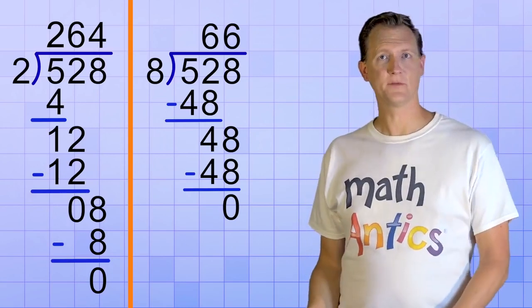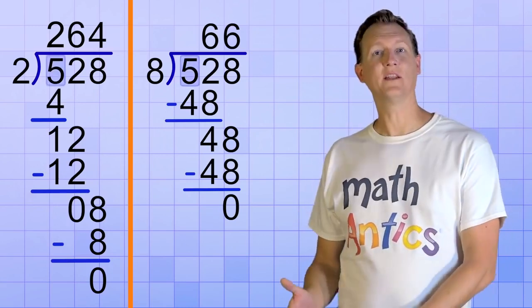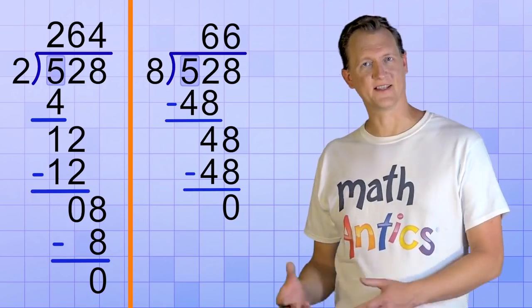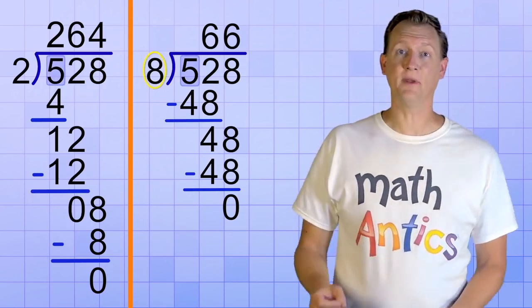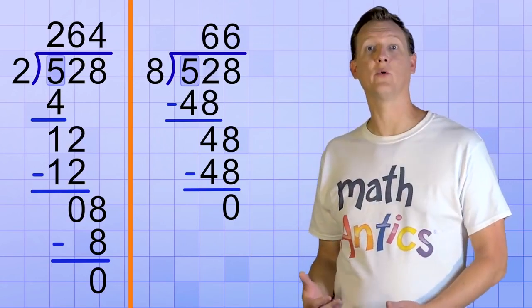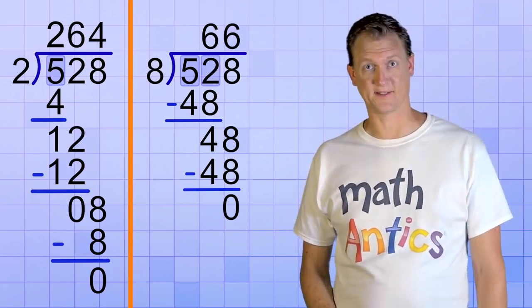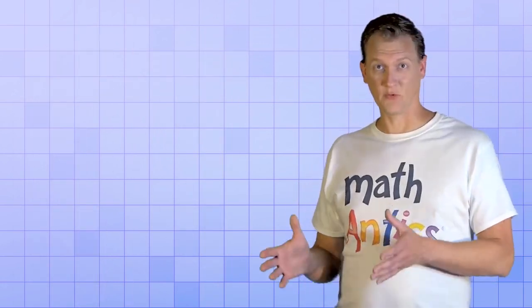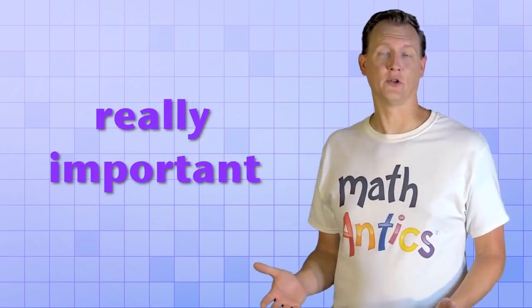Did you notice the difference between these two problems? We wanted to go digit by digit in both problems. But in the second problem, the divisor was bigger than the first digit of the dividend, so we had to start out by going 2 digits at a time in that case.